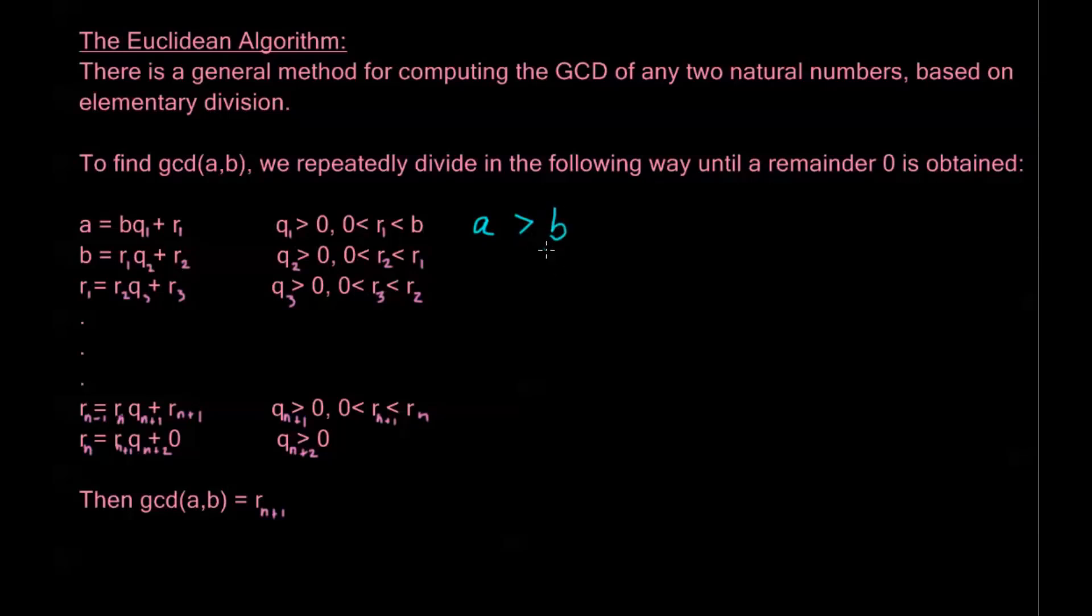So what we're going to do for this Euclidean algorithm is repeatedly divide in the following way until a remainder of 0 is obtained. If we want GCD of A and B, we're going to assume that A is greater than B. Without loss of generality, whichever number is greater will play the role of A in this algorithm. Now what we're going to do is first take A and divide it by B.